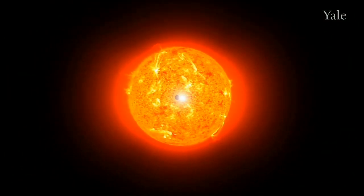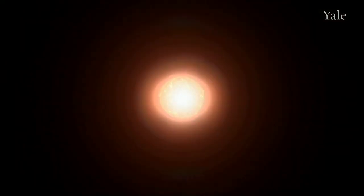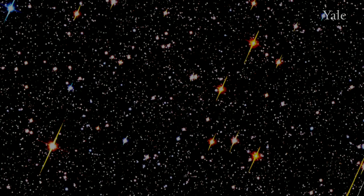For citizen scientists, the treasure hunt is clearly going to be trying to find the smallest transit events possible. The planets that are going to be the most difficult to find are going to be the smallest planets and the planets that have longer orbital periods. These are planets that are farther away from their host stars.